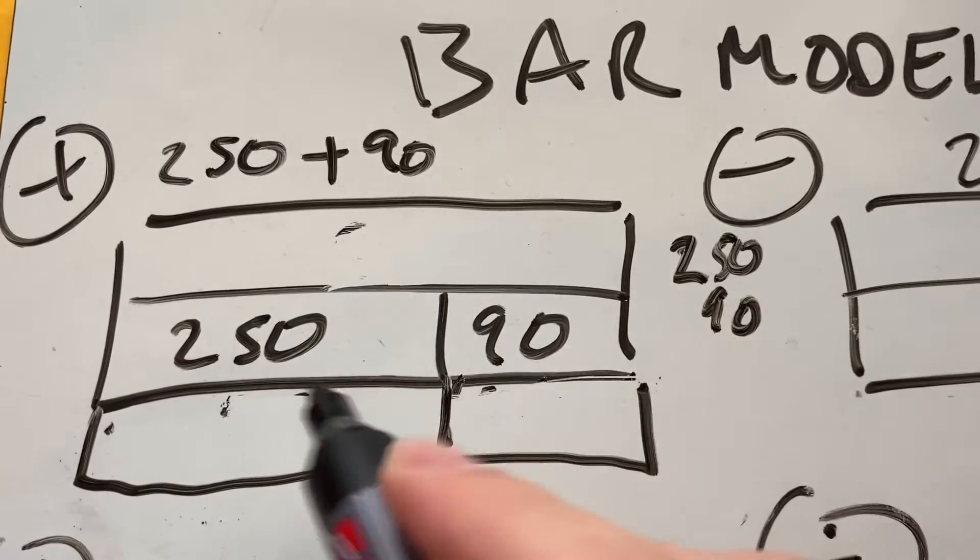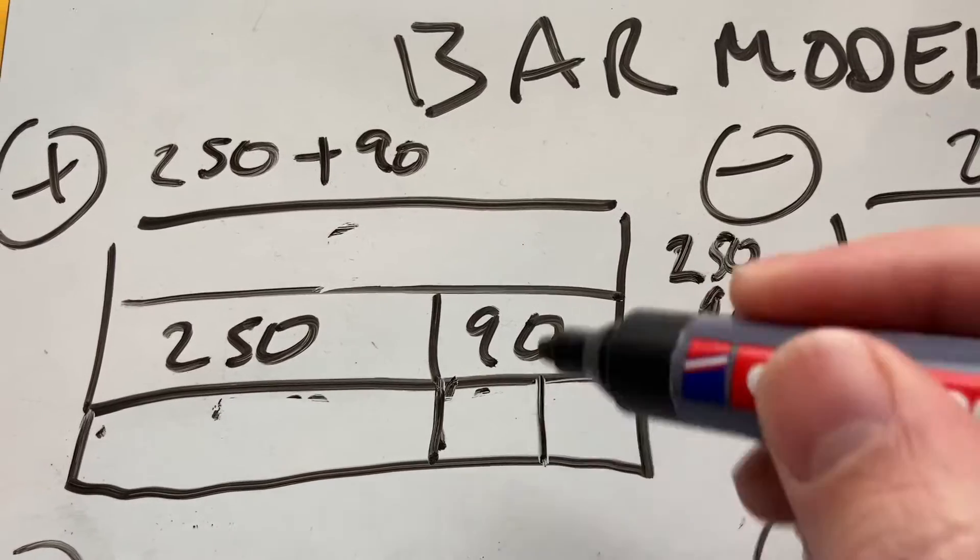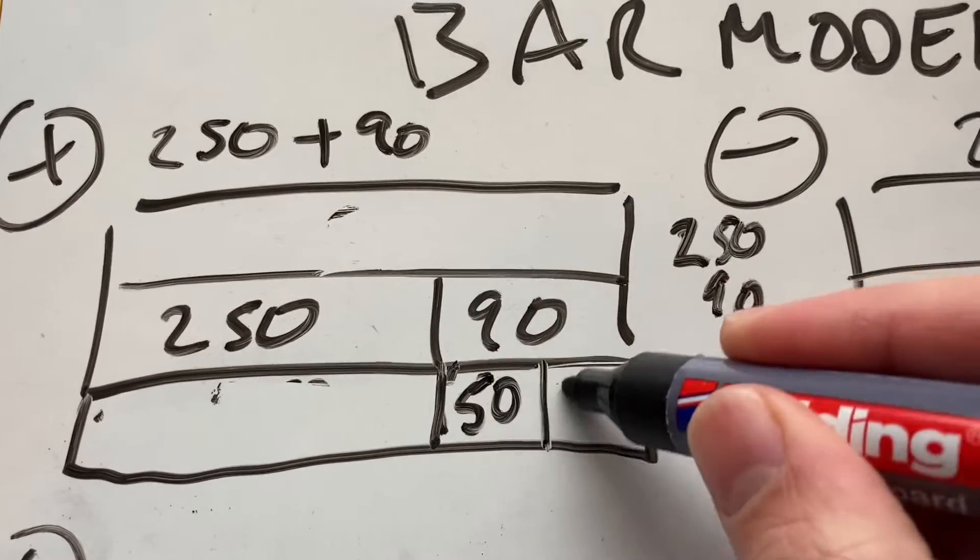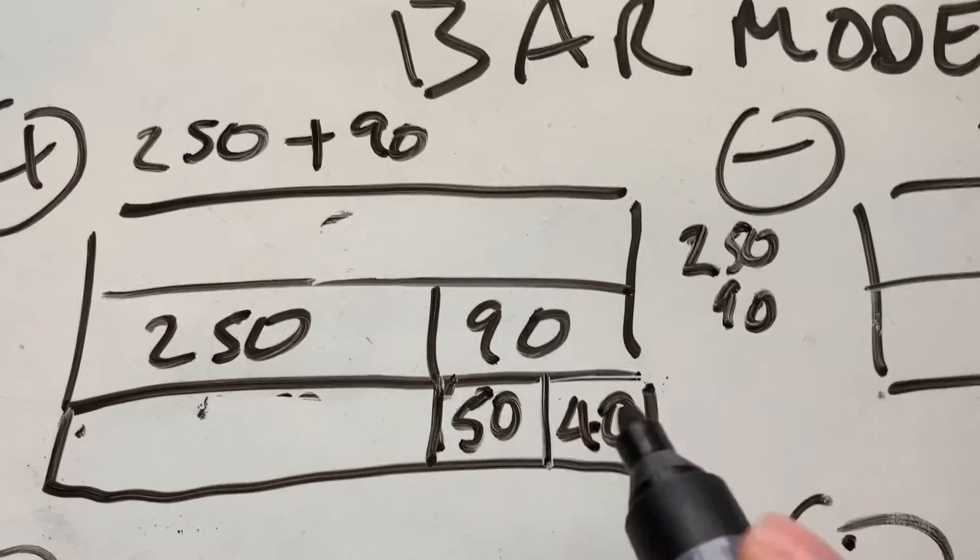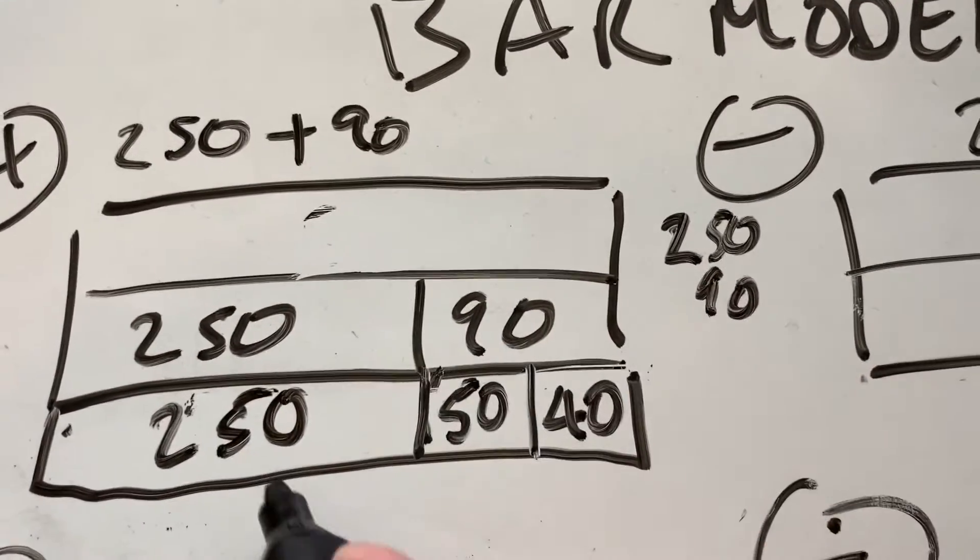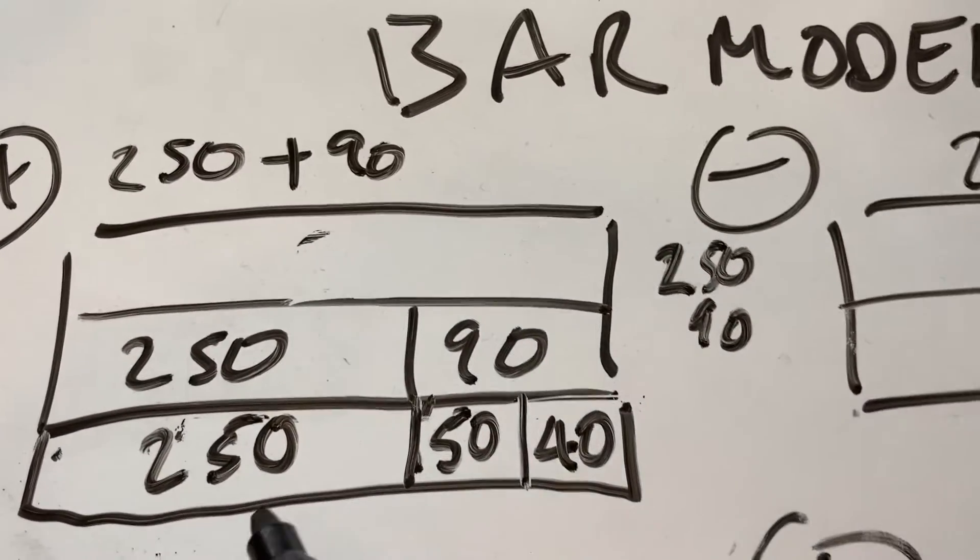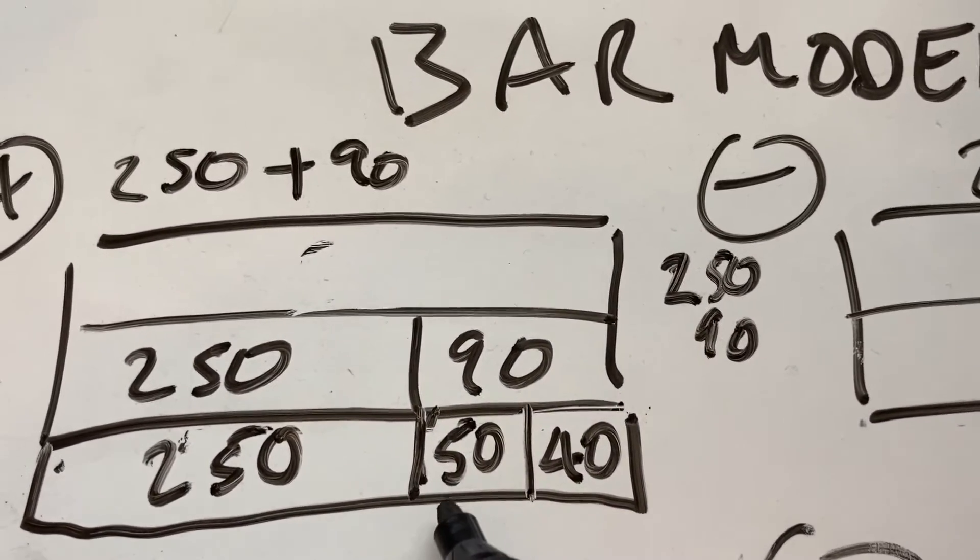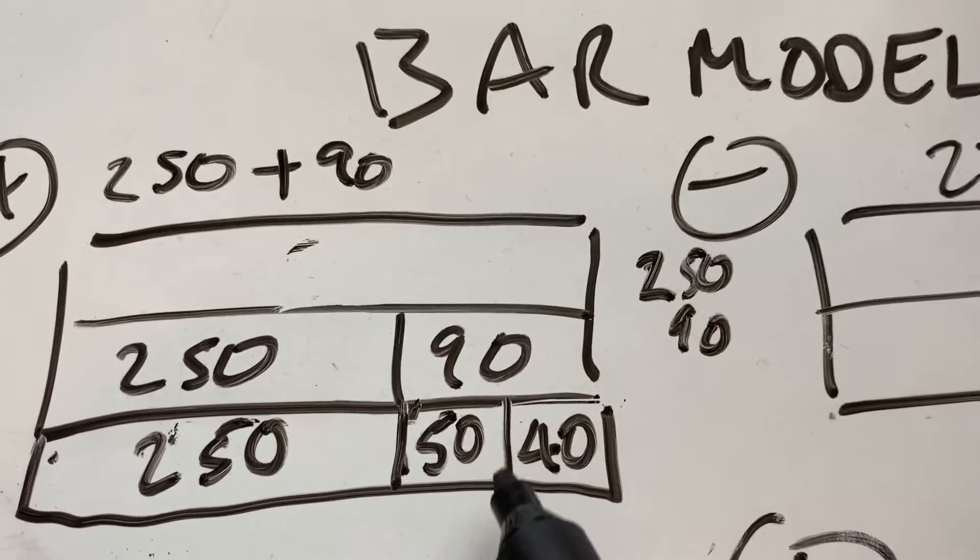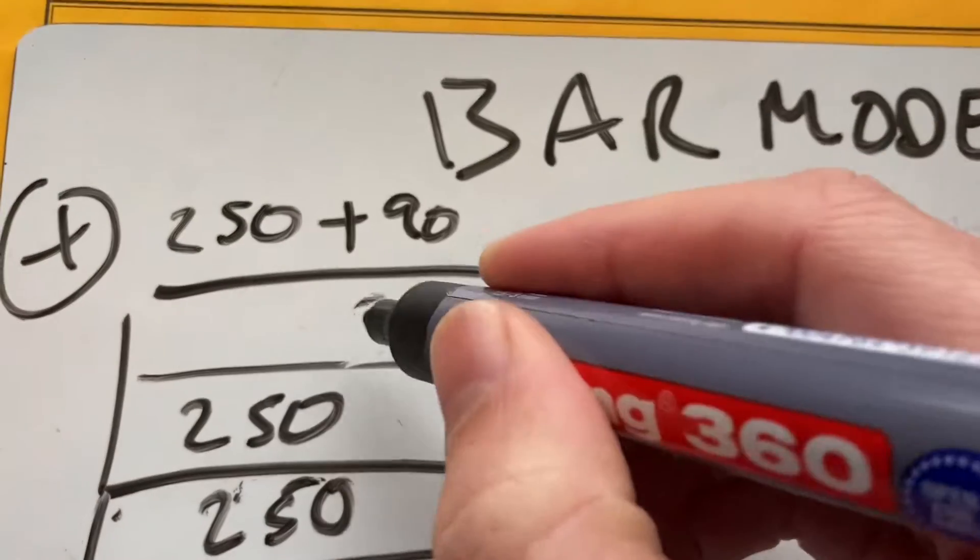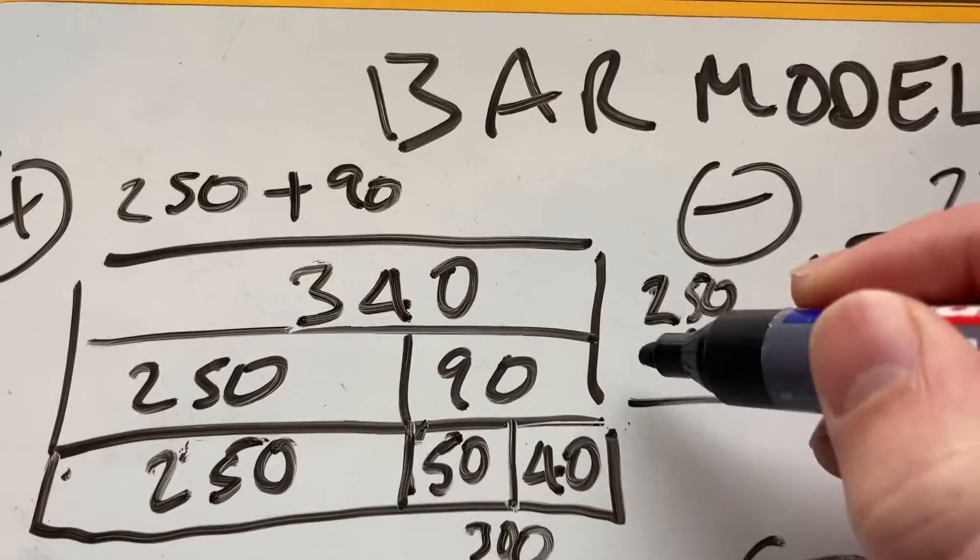And I know that if I'm adding something to 250, I want to get to maybe 300. I'm going to break that 90 into 50 and 40. Some people call this chunking. I'm going to break that into chunks. So I've still got the 250, and I don't know how to add 90 necessarily in my head, but I can add 50 and 50. That's going to get me 300. And then from 300, I can add the 40.